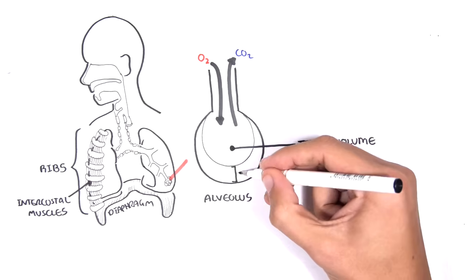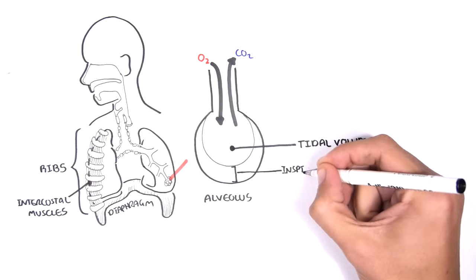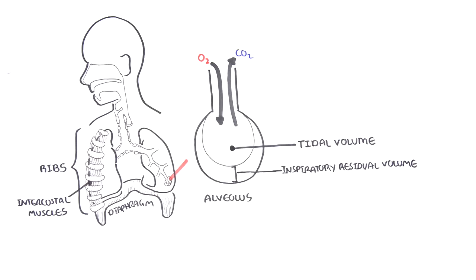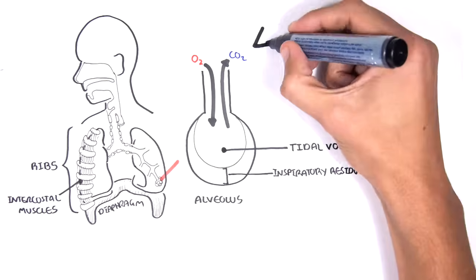Thus our volume of air in our lungs can increase. This is the inspiratory reserve volume. The air inspired with a maximal inspiratory effort in excess of the tidal volume is about 3 liters.